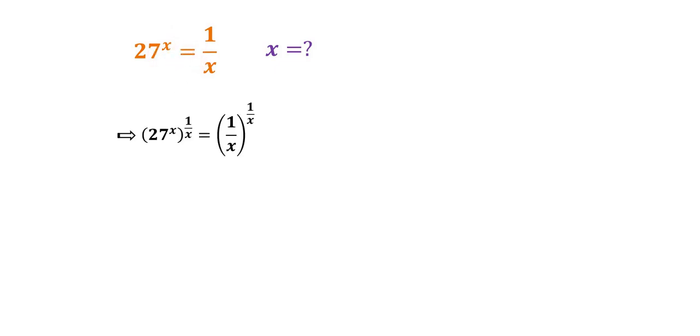With this idea we have 27 to the power of x then to the power of 1 over x is equal to 1 over x to the power of 1 over x.